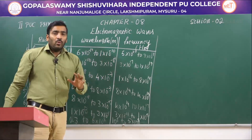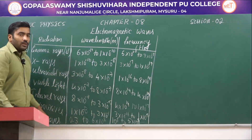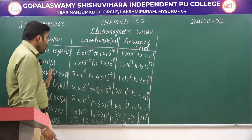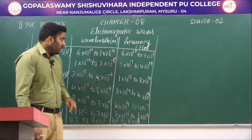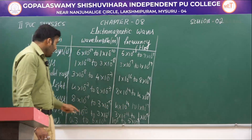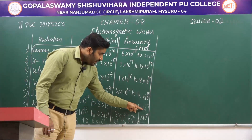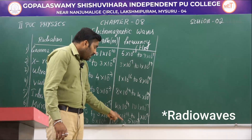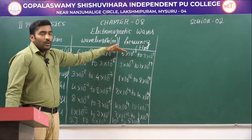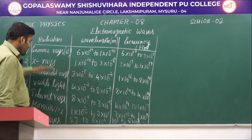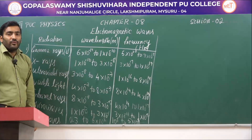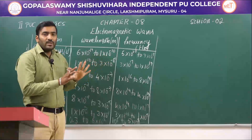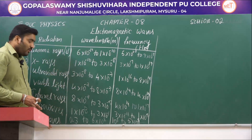Now let us write the frequency ranges for these radiations in decreasing order. For X-rays: 3×10¹⁹ to 1×10¹⁹ Hz; UV rays: 1×10¹⁶ to 8×10¹⁴ Hz; visible light: 8×10¹⁴ to 4×10¹⁴ Hz; infrared rays: 4×10¹⁴ to 1×10¹³ Hz; microwaves: 3×10¹¹ to 1×10⁹ Hz; and radio waves: 10⁹ to 5×10⁵ Hz. From gamma rays to radio waves, this is the decreasing order of frequency.